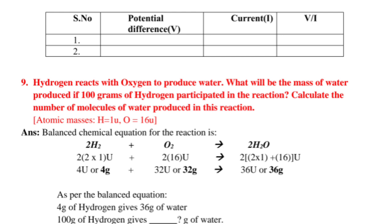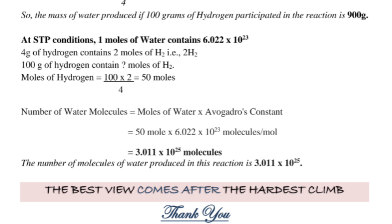As per the balanced equation, 4 grams of hydrogen gives 36 grams of water. 100 grams of hydrogen gives G of water. Amount of water equals 100 by 36 equals 900 grams of water. So, the mass of water produced if 100 grams of hydrogen participated in the reaction is 900 grams.